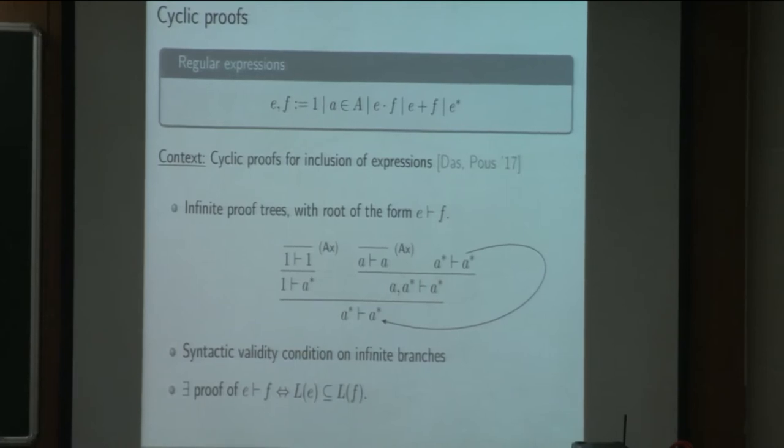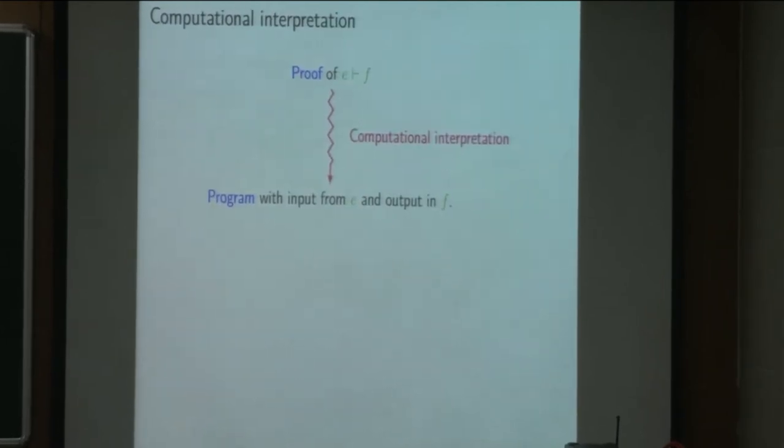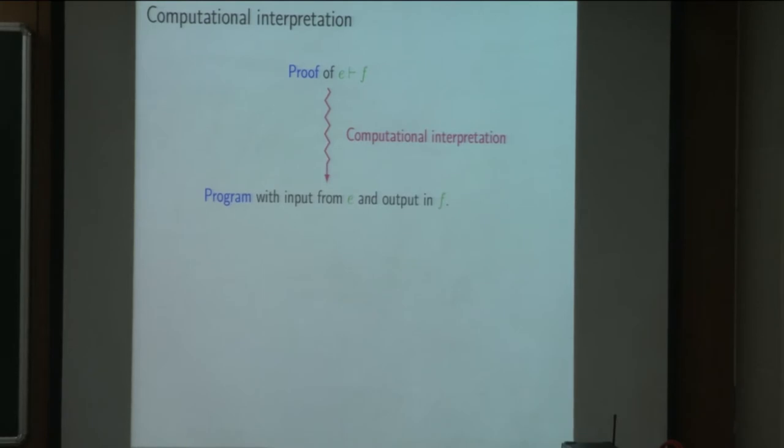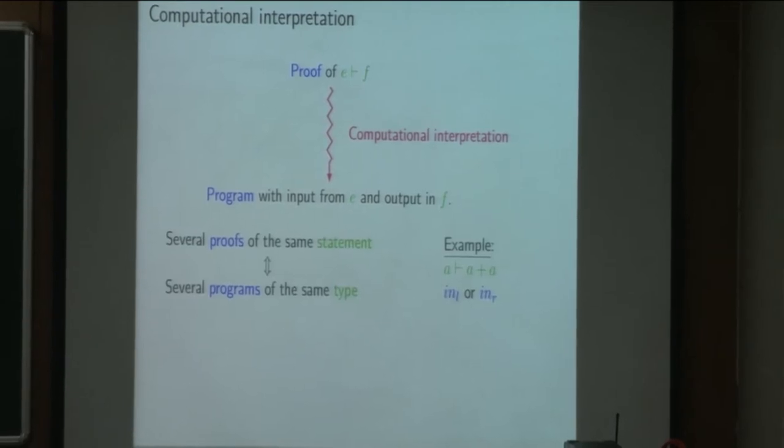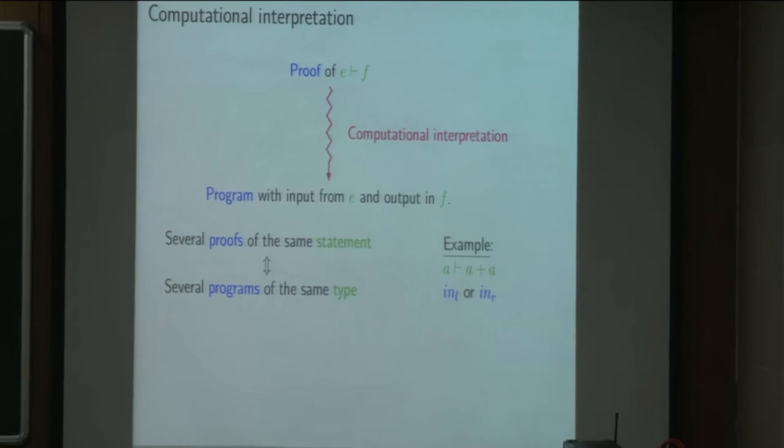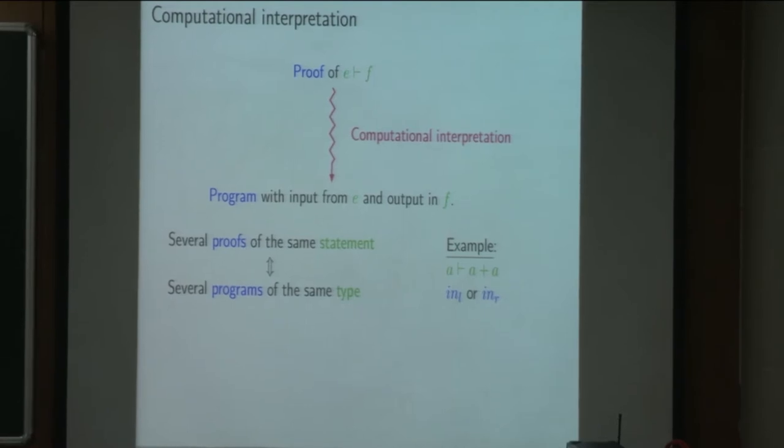And what we were interested in in this work is about the computational interpretation of such a proof system. We want to see a proof of a sequence E dash F as a program that takes an input in E and outputs something in F. The fact that we can have several proofs of the same sequence reflects the fact that we can have several programs that have the same types. And for example, if we want to prove the sequence A dash A plus A, we have two choices.